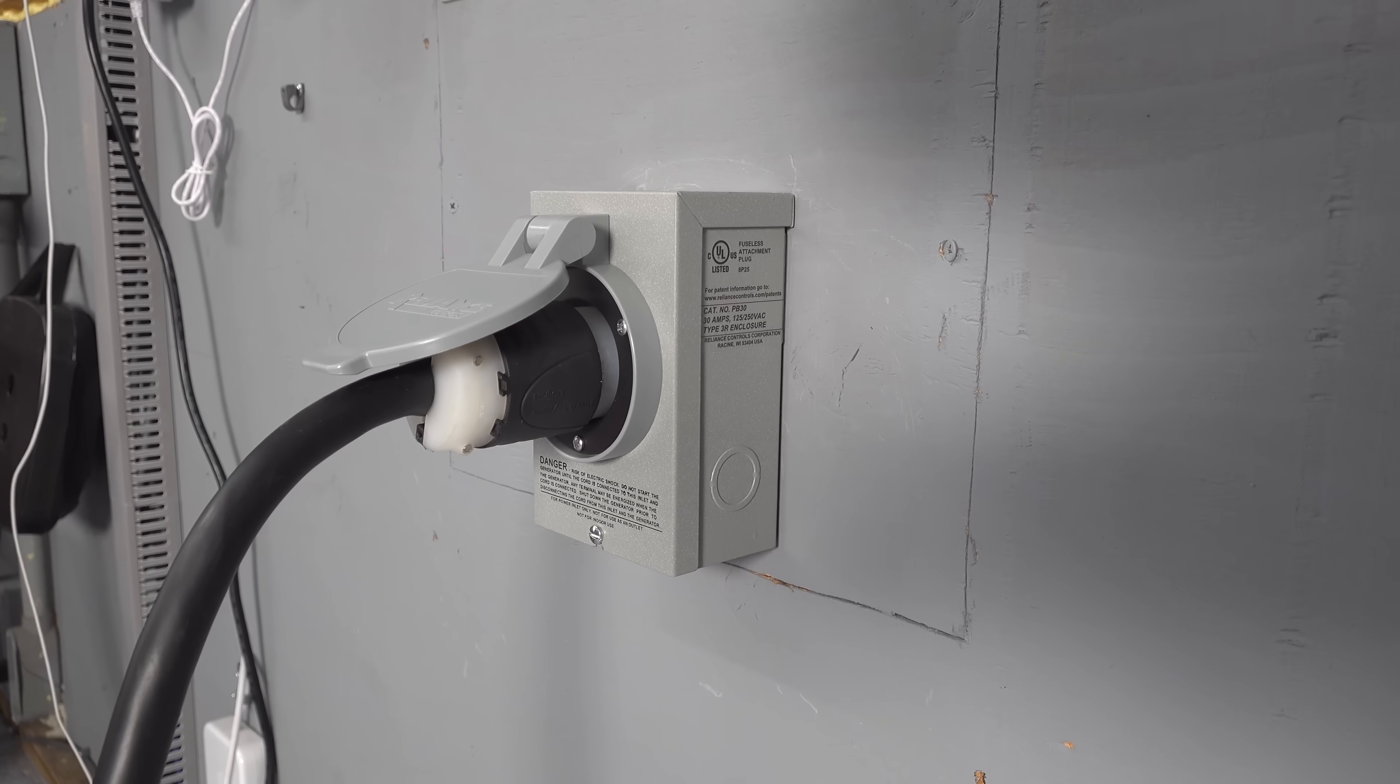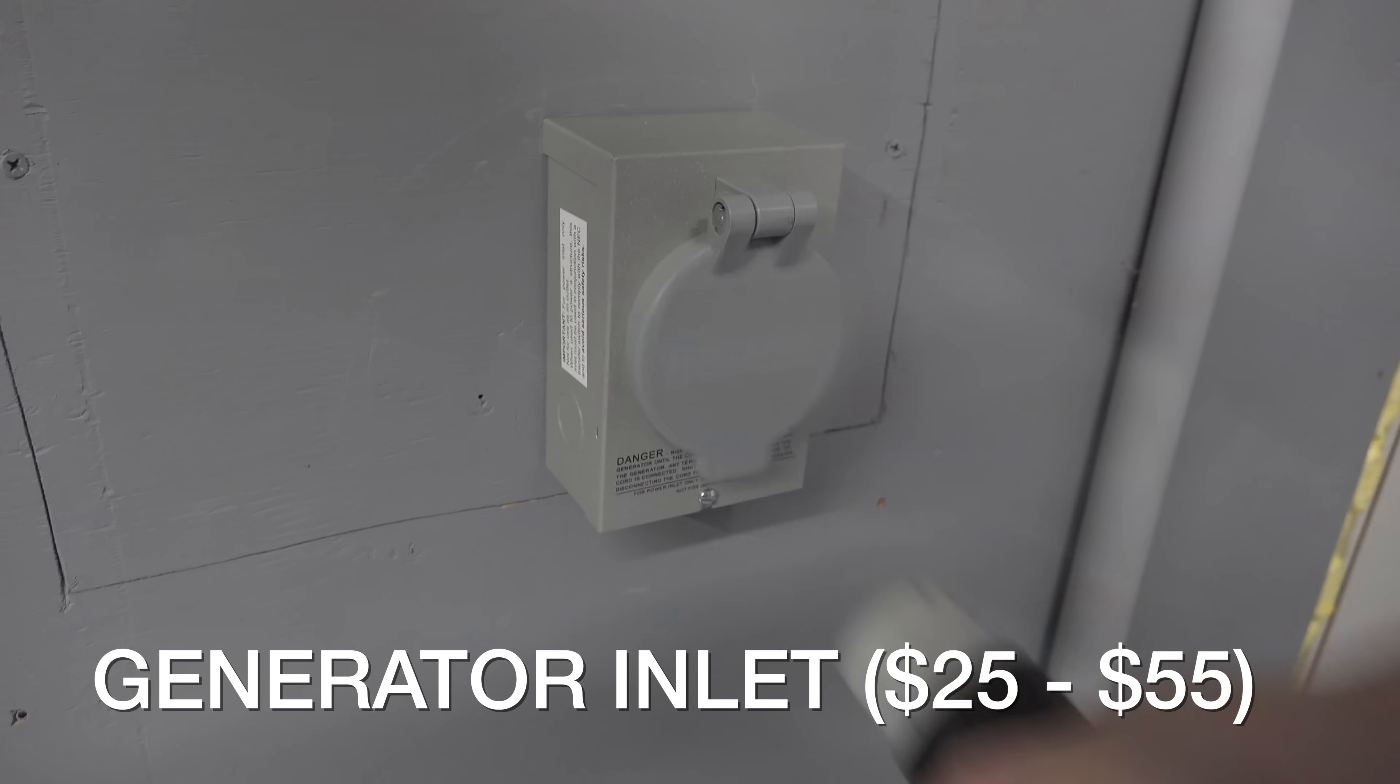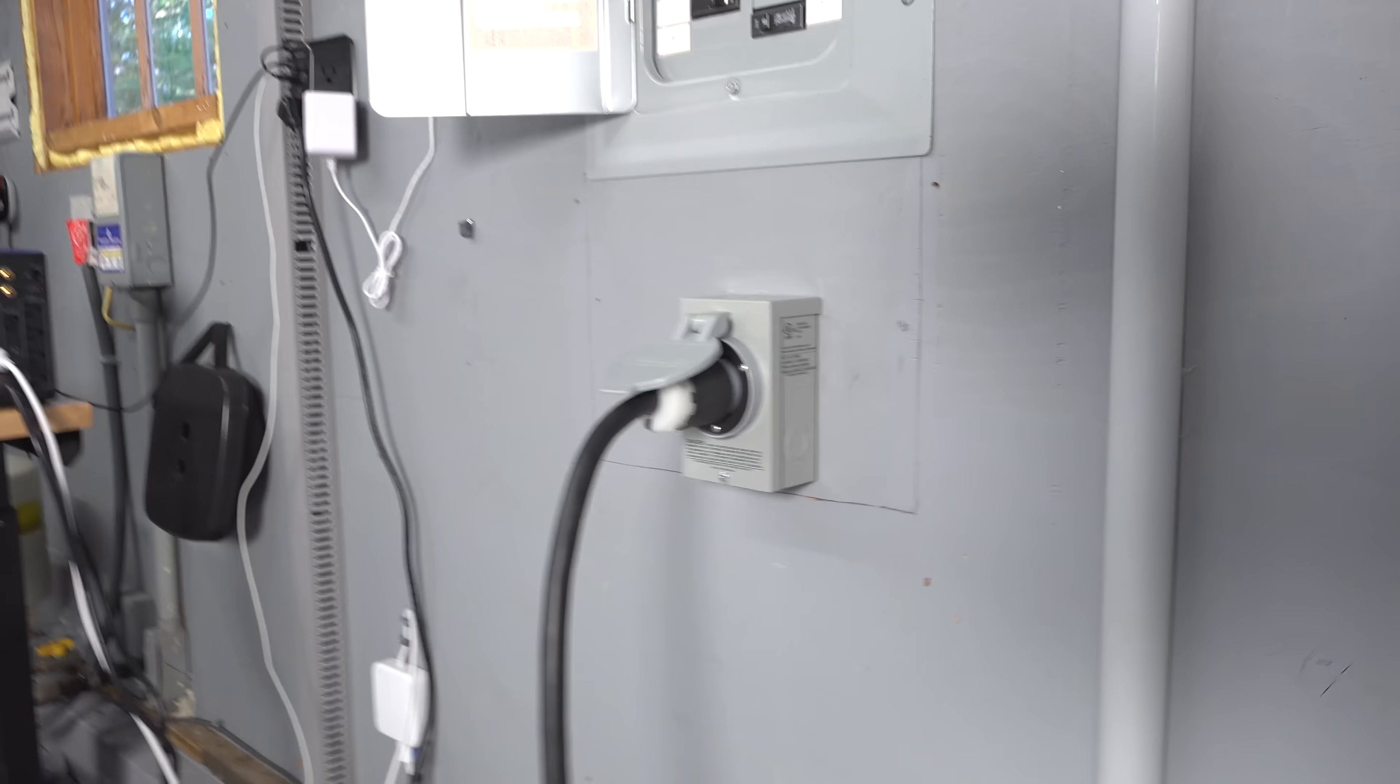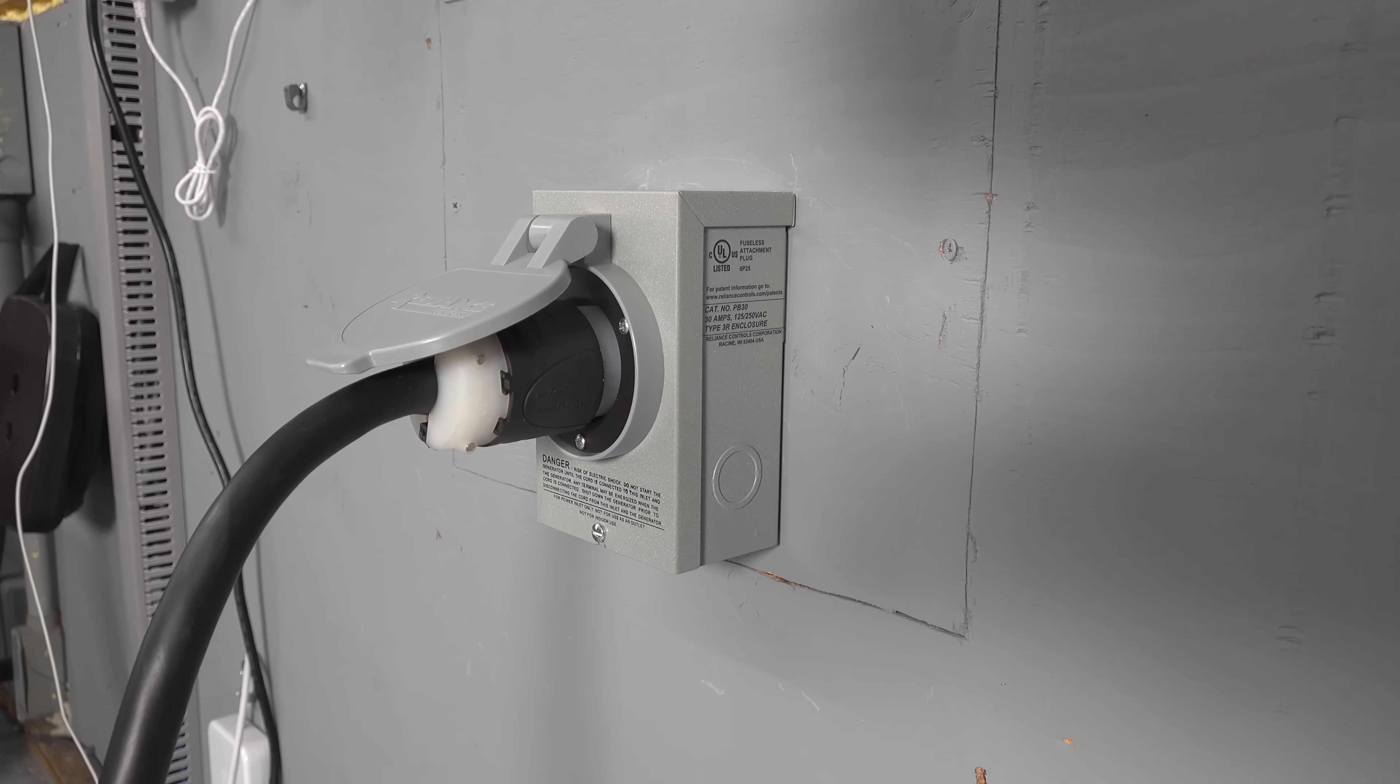The most important part of the system is going to be the generator inlet. You can install this on the inside or the outside of your home. For inlets, there are two ratings: 30 amp and 50 amp.